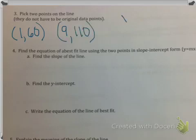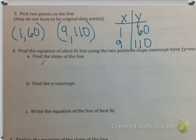So if we move forward, I'm just rewriting my points, 1,60 and 9,110. And now this is where things should look familiar with what you did with Mr. Guven. So Mr. Guven, he had you then put those points in a table. So we have x is 1, y is 60, 9 is 110. I'm sorry, x is 9, and y is 110.